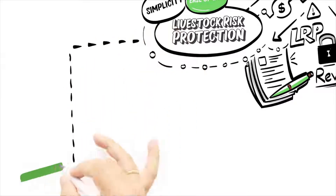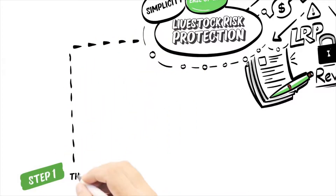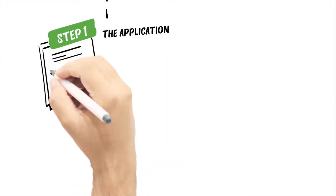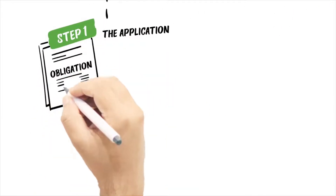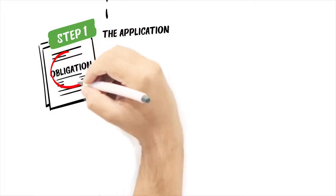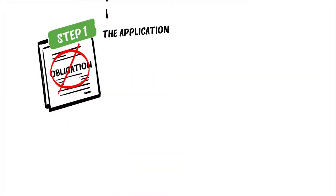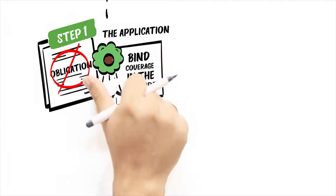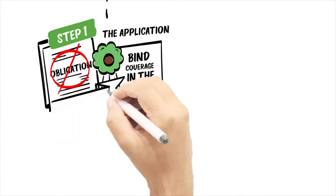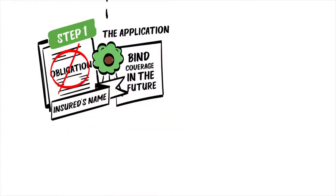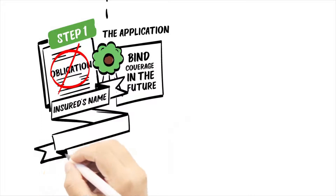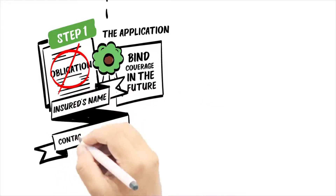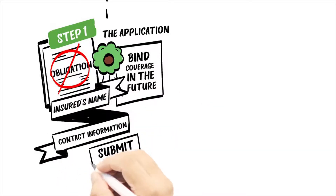We begin with the application. This process is very straightforward. Completing an application comes with no obligation and simply qualifies you to bind coverage in the future. The insured's name, tax identification number, and contact information are placed on the application and is all you need to begin.